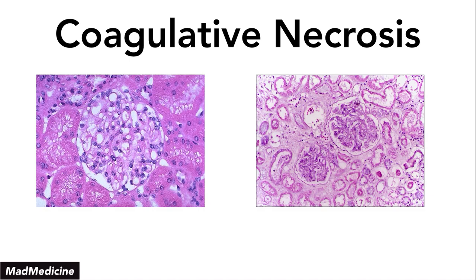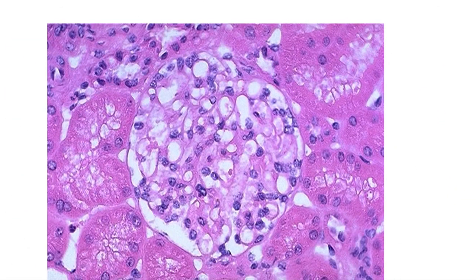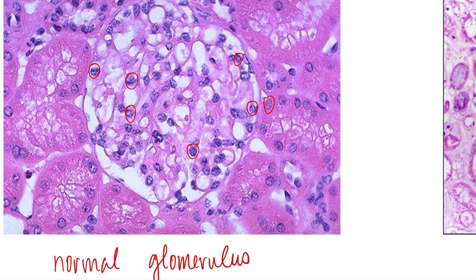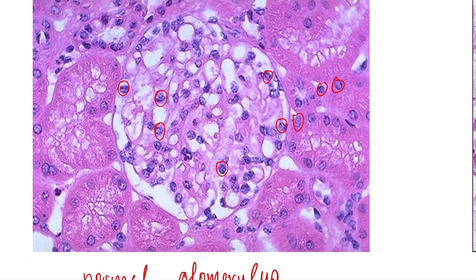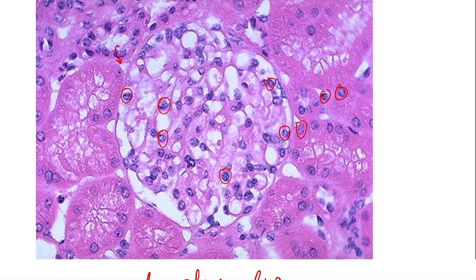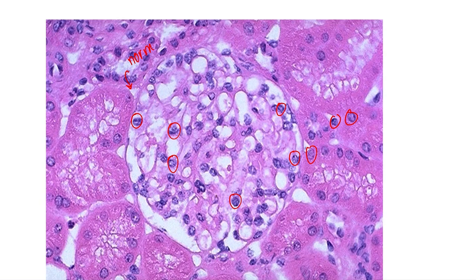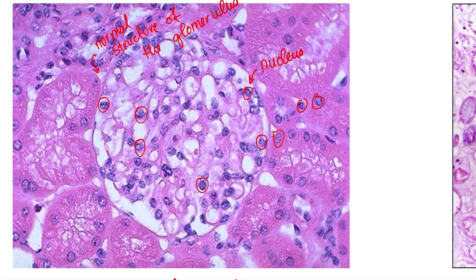The slide on the left is a normal glomerulus. You know it's normal because if you zoom in, you can see all of the nuclei in the glomerular cells and in the tubule cells. You can also see the normal structure of the glomerulus with clearly visible nuclei.